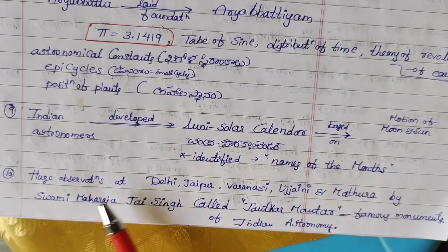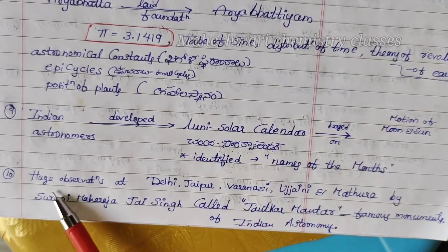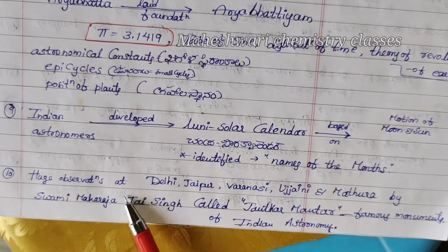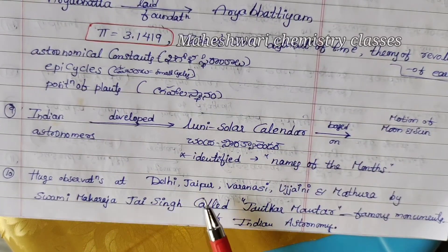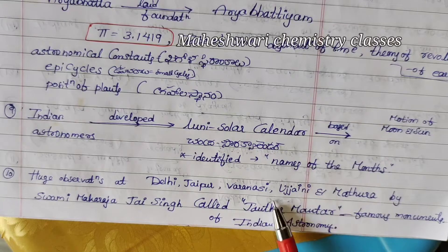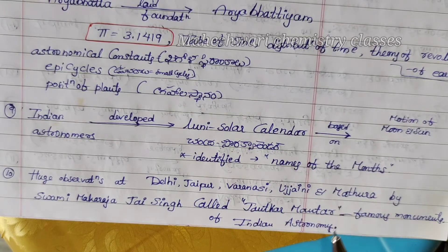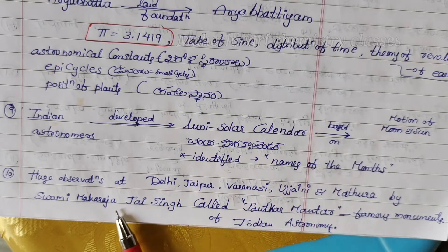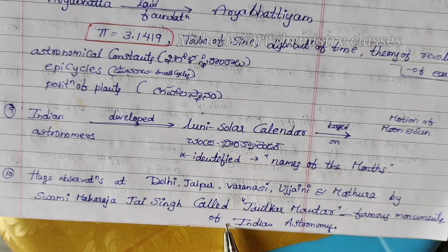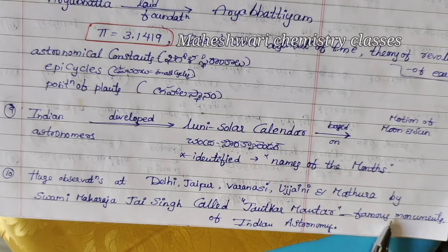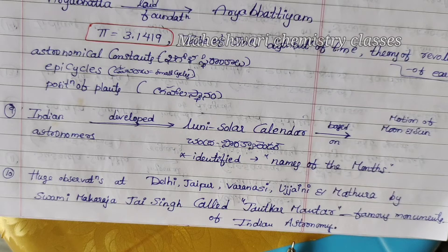Tenth point: Huge astronomical observations were made at Delhi, Jaipur, Varanasi, Ujjayini, and Madura by Swami Maharaja Jaising. These observatories are called Jantar Mantar and are famous monuments of Indian astronomy.